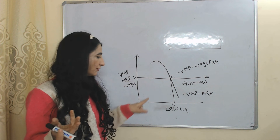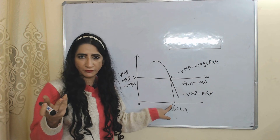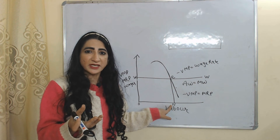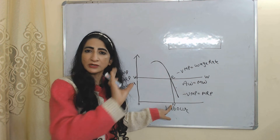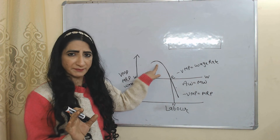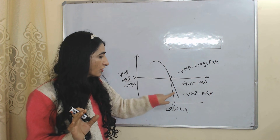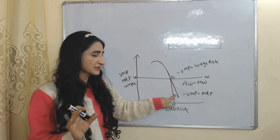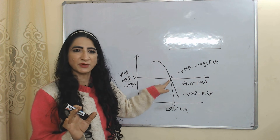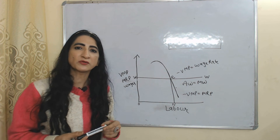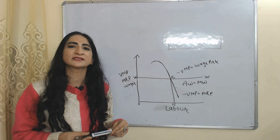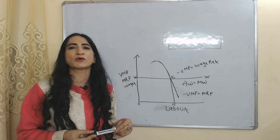That's why the firm will hire only ON amount of labor — because at ON units of labor, the wage rate equals their VMP. Above point E, VMP is more than wages, and below point E, VMP is less than wages, so E is the maximum profit point. This is all about the Marginal Productivity Theory of Distribution. Thank you so much for watching this video.